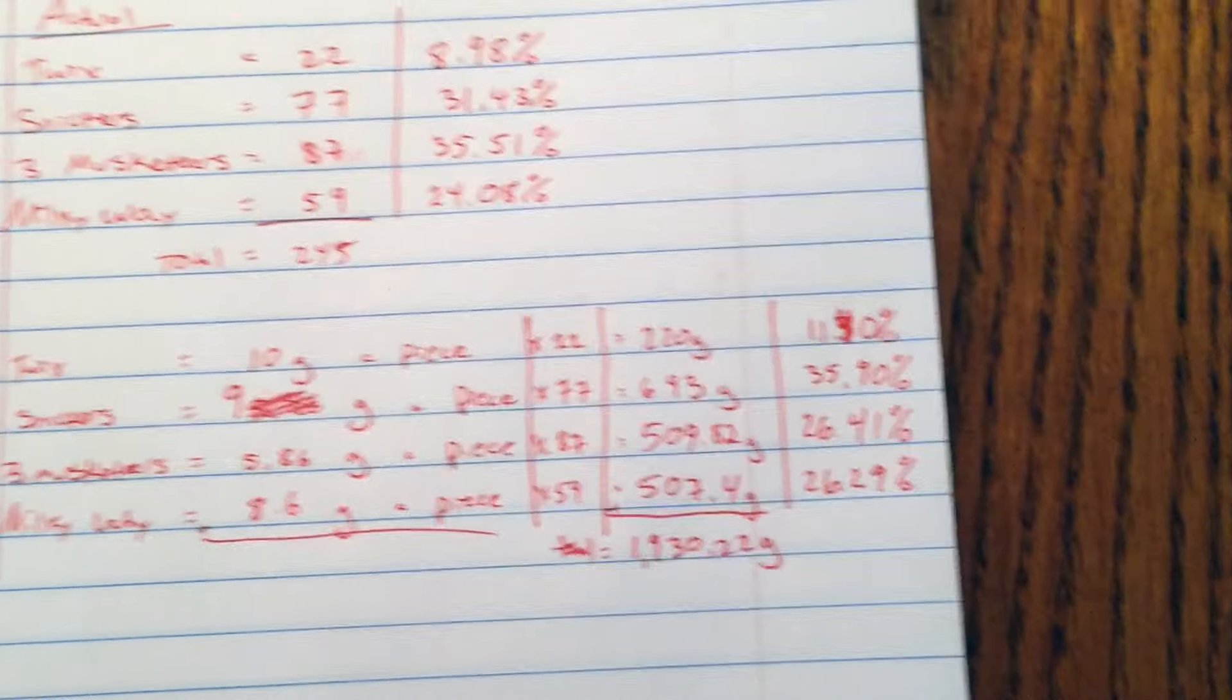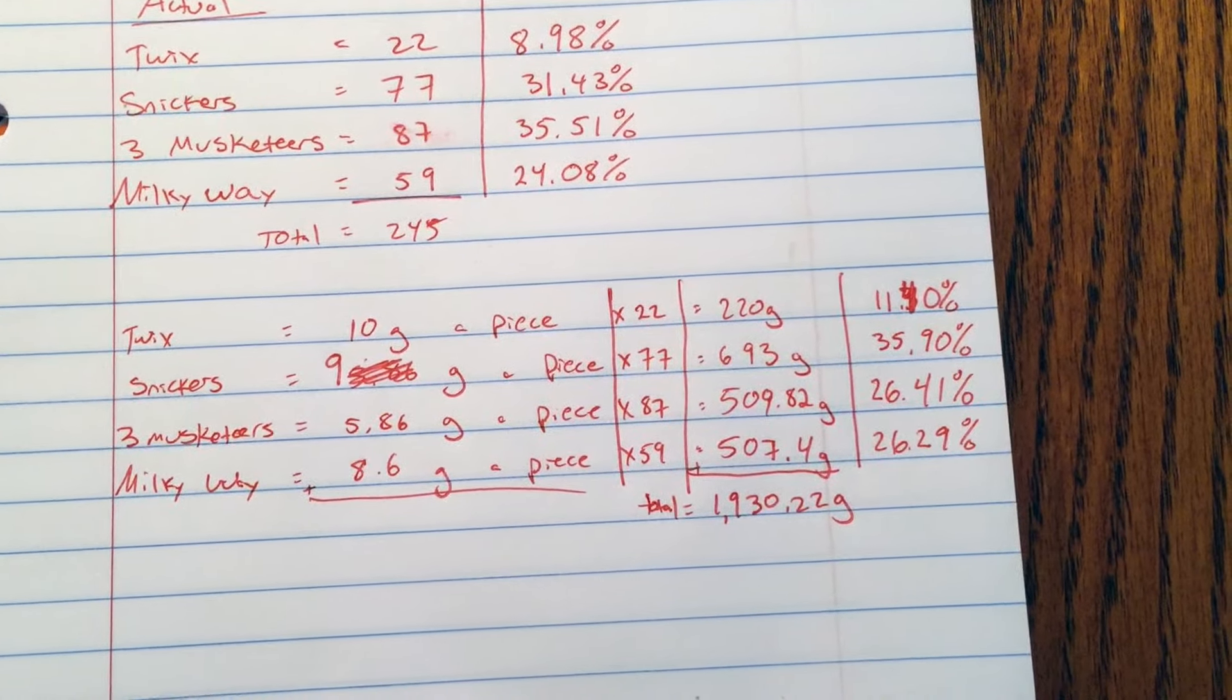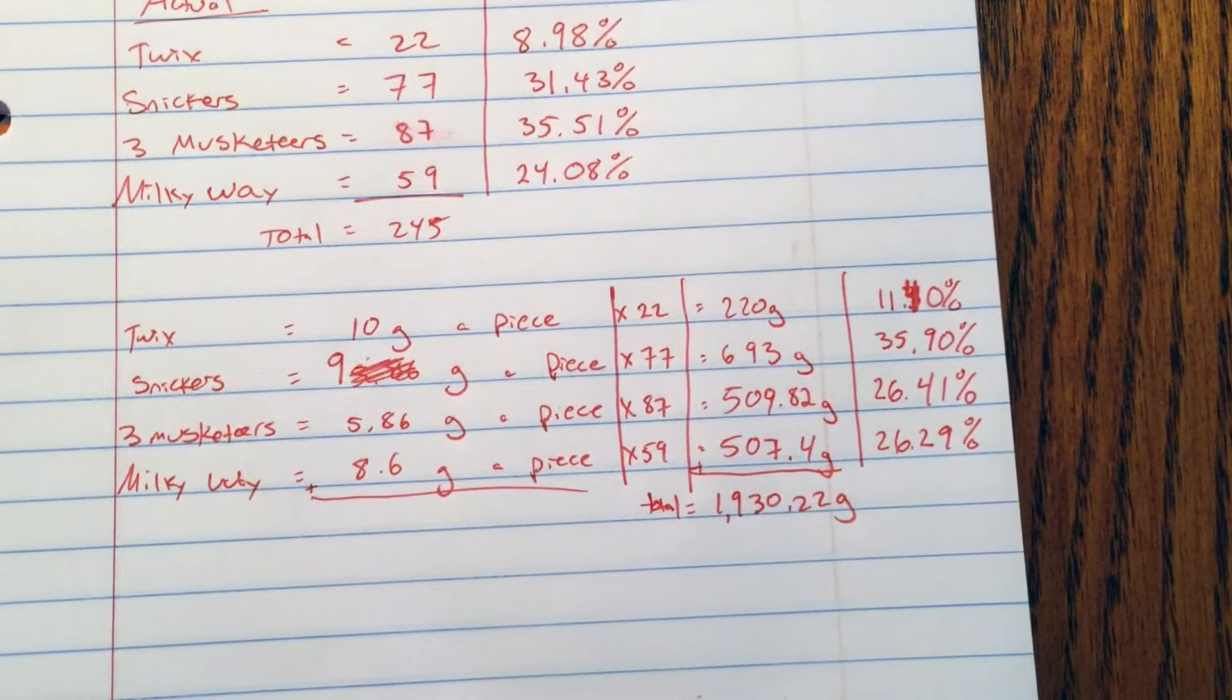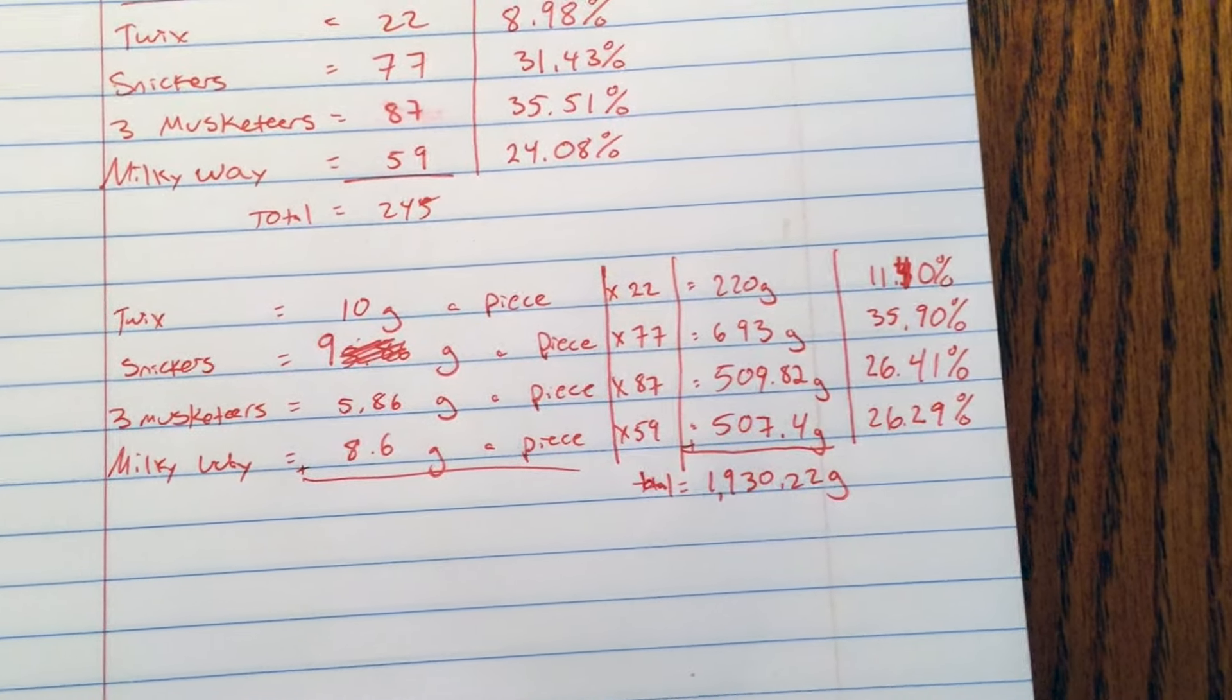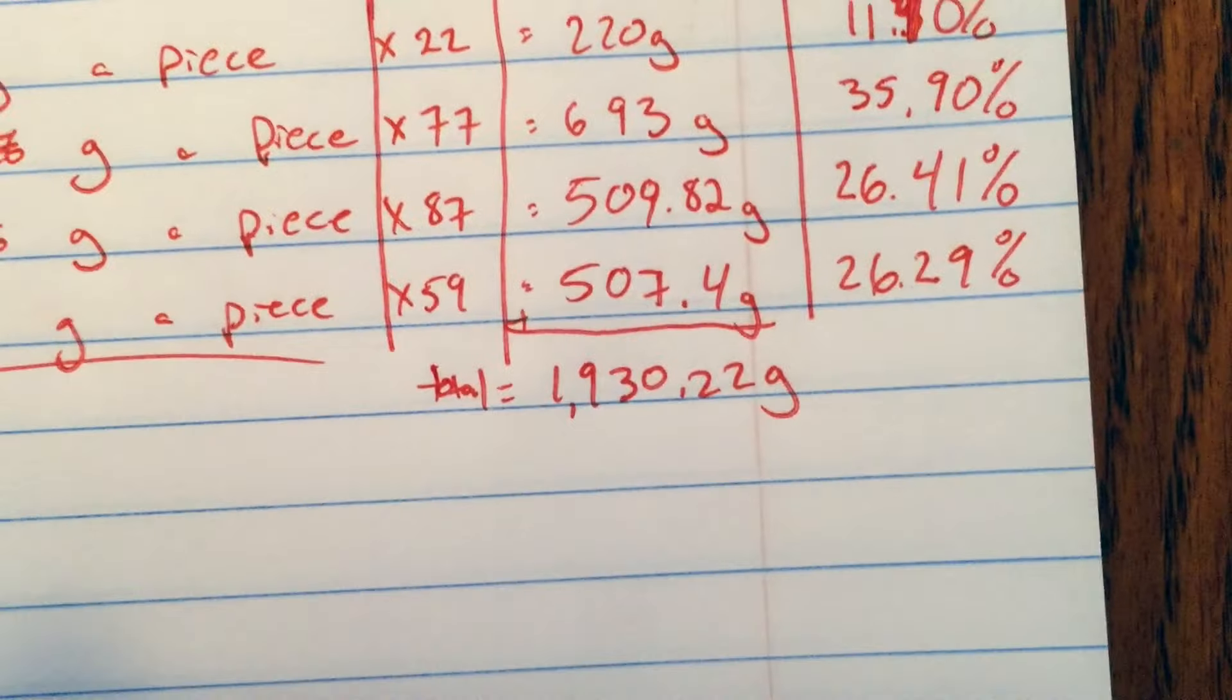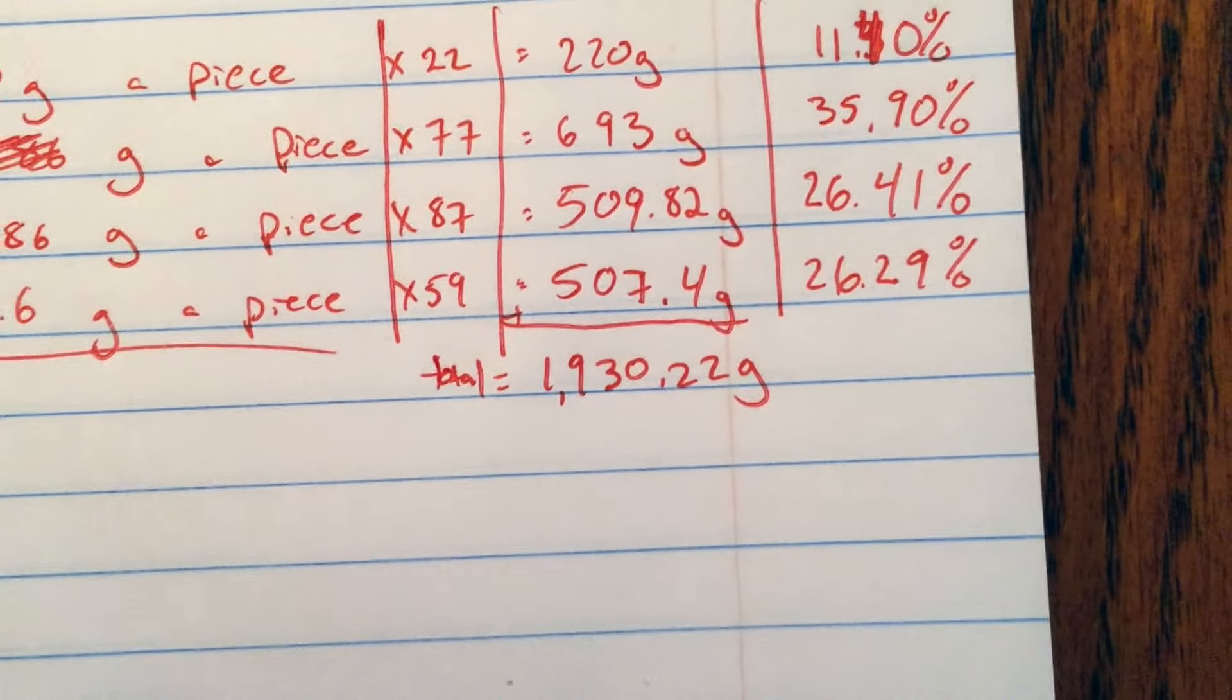And we got a total of 220 grams for the Twix, 693 grams for the Snickers, 509.82 grams for the Three Musketeers, and 507.4 grams for the Milky Way. So that comes to a total of 1,930.22 grams.